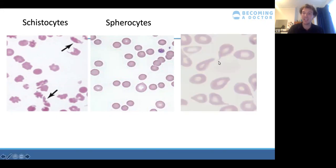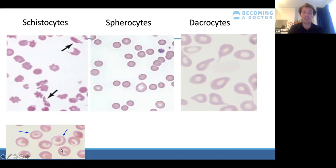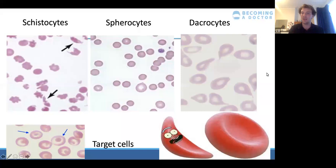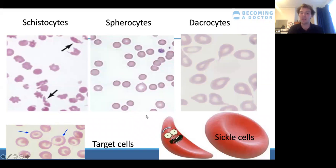Teardrop cells — officially dacrocytes — look like teardrops and are seen in diseases with fibrosis within the bone marrow. Target cells are quite easy to spot as they look exactly like their name suggests. They are non-specific and seen in liver disease, thalassemia, and hyposplenism (e.g., after splenectomy). Finally, sickle cells have the distinctive sickle shape and are only seen in sickle cell disease.